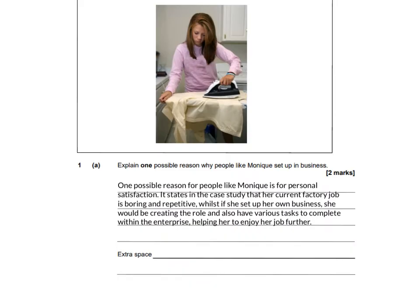So when considering the question I need to use ICF, which is instruction, context and focus. The instruction is 'explain', and it's explain 1, so I have to go for 1 point. The focus is in terms of setting up the business, and the context is Monique. So I have to make sure the answer relates to Monique. So I've put: one possible reason for people like Monique is for personal satisfaction — that would be my main point. But then I'd have to explain why that's a valid point and how it relates to Monique.